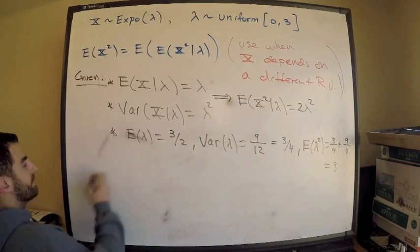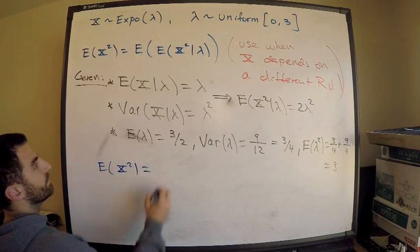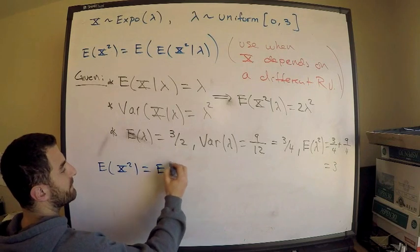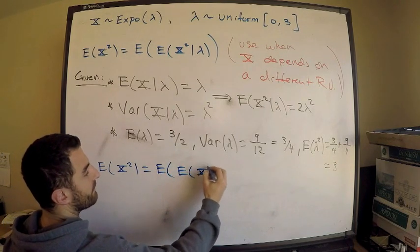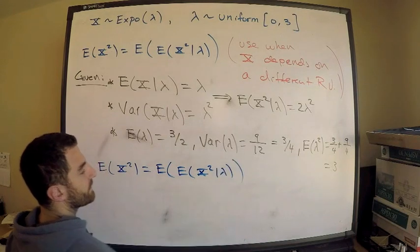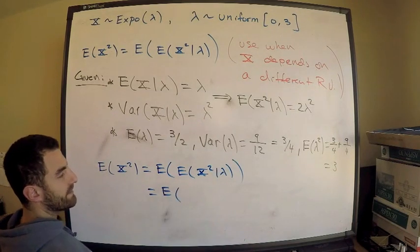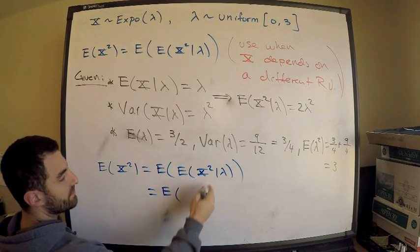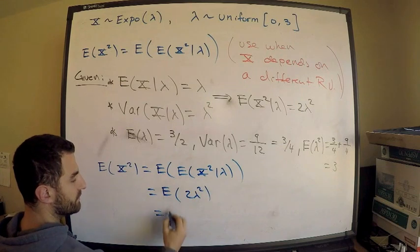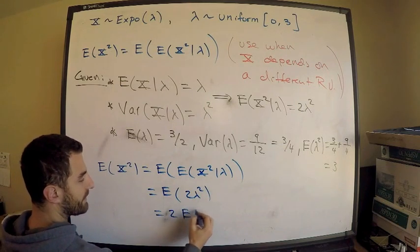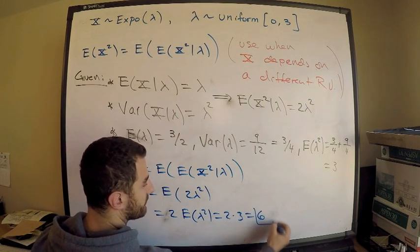Alright, so that tells me that the expected value of x squared, which is equal to the expected value of the expected value, the double expectation, of x squared given lambda. Just compute each of these individually. This is the expected expectation. We just computed this, this is 2 lambda squared, which is equal to, bring the 2 out, times the second moment of lambda squared, which is 2 times 3, which is 6.